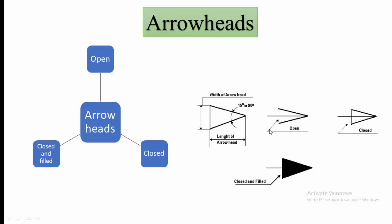See in this diagram. This is the open arrowheads. We all are familiar about this. From teenage or from childhood, we all are giving arrowheads like this. The second is the closed arrowhead. Here we make a triangle over here. And the last is closed and filled arrowheads. We will use this type of arrowheads in the engineering.